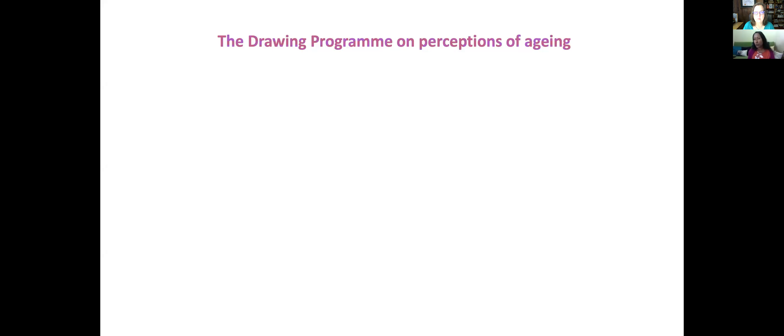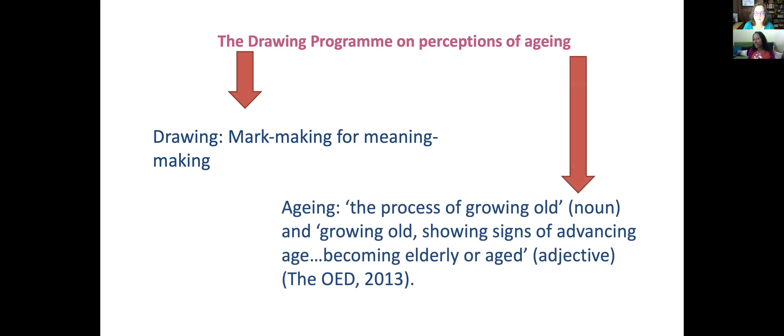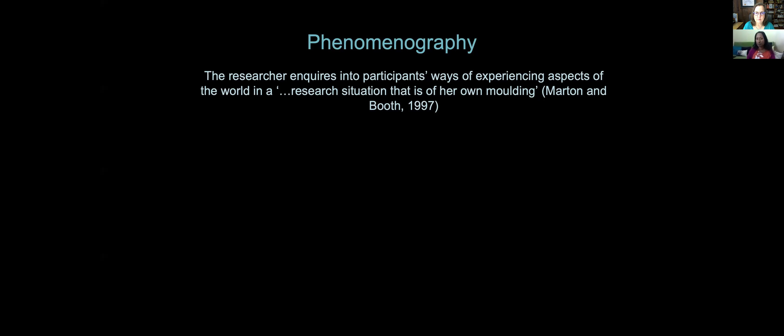So this is the background — I called it 'the drawing program.' Two definitions very quickly: drawing has a very broad definition — mark-making. We are not drawing representational things. For example, I have a little sculpture of a polar bear — 'please draw it' is not the type of drawing we did. We did mark-making, which will make sense in a bit. And aging was simply defined as signs of growing older.